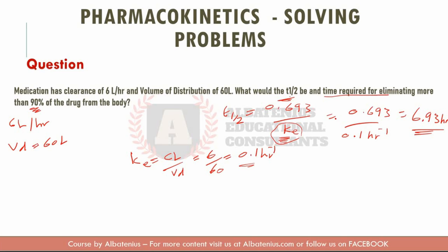So this is the first part, which is the T half. Then I need to find out the time required to reach more than 90%. If you guys remember, we said that one T half or one half life takes 50% of the medication. And we said 2 T half, 75% of the medication gets eliminated by then. And 3 T halves, 87.5% gets eliminated. And we said that the 4 T halves, 93.8% gets eliminated.